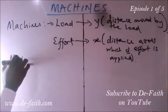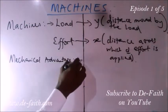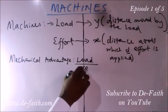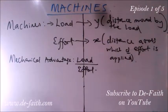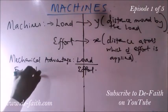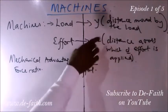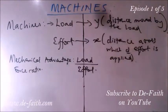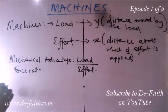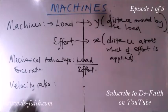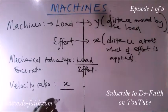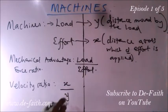When we consider the ratio of load to effort, it gives us a new term called the mechanical advantage, which is the ratio of load to effort. Another name for mechanical advantage is force ratio. When we consider the ratio of the distance across which the effort is applied to the distance moved by the load, we arrive at another term known as the velocity ratio. So the velocity ratio is the distance moved by effort over the distance moved by load.